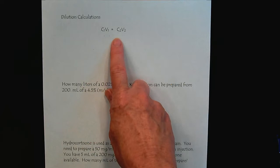Many pharmaceuticals are prepared in a highly concentrated stock solution, and then it's up to the nurse to do the dilution so that we have the correct dosage for the patient. All of these dilution calculations, you can see the formula on your handout, C1V1 equals C2V2.